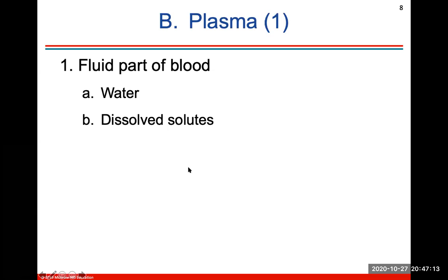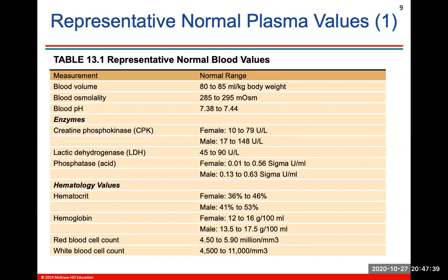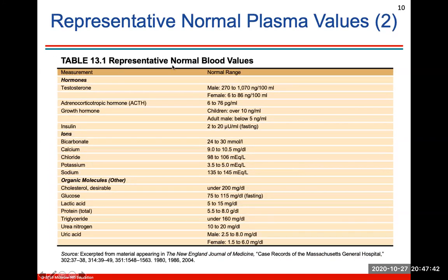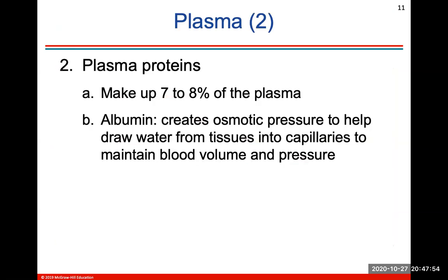Plasma is the fluid part of blood, made mostly of water and dissolved solutes. Here is a look at normal blood values including blood volume, osmolarity, blood pH, different enzymes, and hematology values looking at hematocrit, hemoglobin, and red and white blood cell count. There are also normal blood values of different hormones, ions, and organic molecules — good to know the different types of things you can measure from plasma and blood samples.